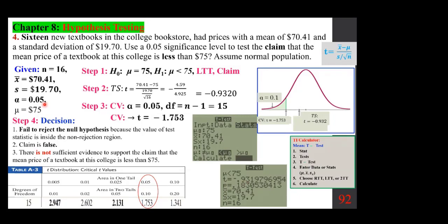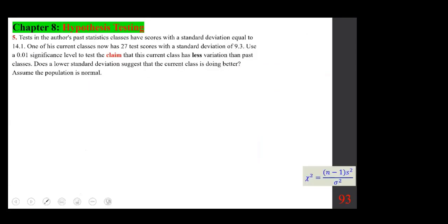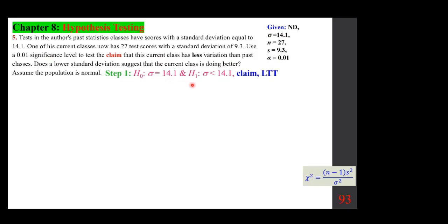Tests in the author's past statistics classes had scores with a standard deviation equal to 14.1. One current class now has 27 test scores with a standard deviation of 9.3. Use a 0.01 significance level to test the claim that this current class has less variation than past classes. Given: sigma = 14.1 (past), N = 27, S = 9.3 (current class), alpha = 0.01. H₀: sigma = 14.1; H₁: sigma < 14.1 — left-tail test and that is the claim.